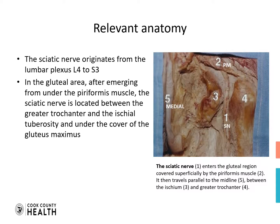Relevant anatomy: the sciatic nerve originates from the lumbar plexus L4 to S3. In the gluteal area, after emerging from under the piriformis muscle, the sciatic nerve is located between the greater trochanter and the ischial tuberosity, and under the cover of the gluteus maximus.